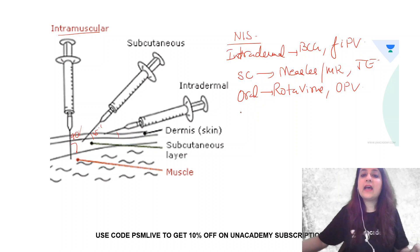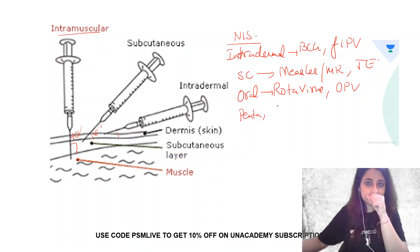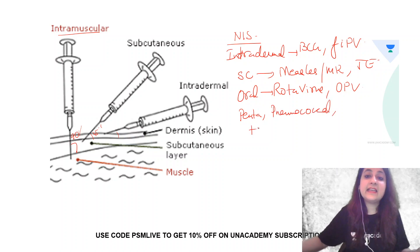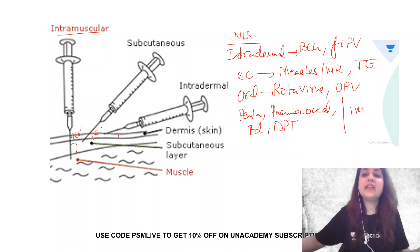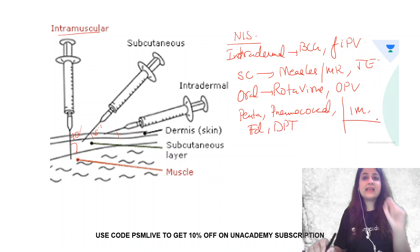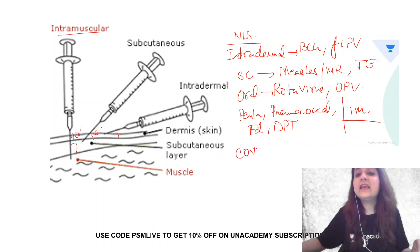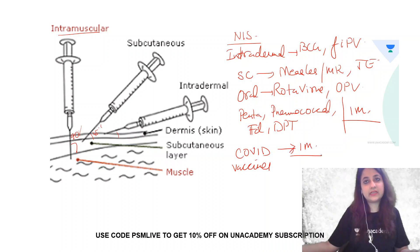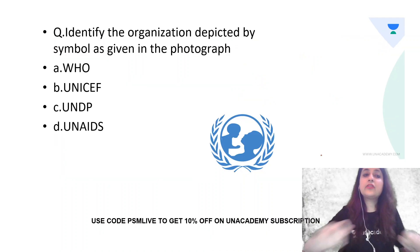All other vaccines — whether it is Penta, Pneumococcal, TD vaccine, or DPT — are being given intramuscularly. COVID vaccines are also being given by which route? They are also being given intramuscularly.